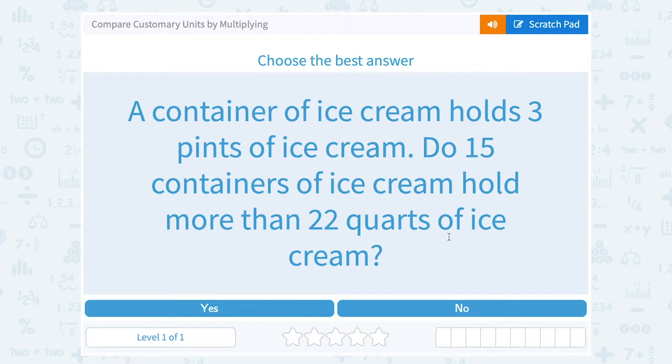Let's take a look at how to compare customary units by multiplying. A container of ice cream holds three pints of ice cream. Do 15 containers of ice cream hold more than 22 quarts of ice cream?